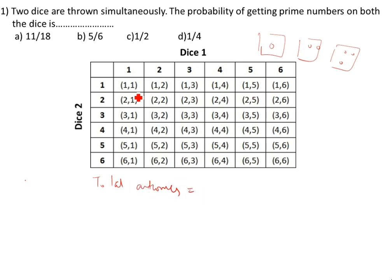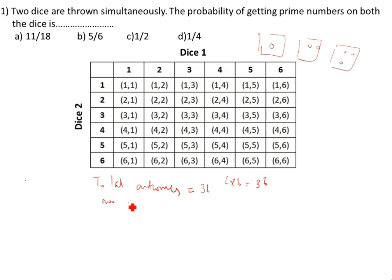Counting the total outcomes: 1, 2, 3... up to 36. So total outcomes equal 36. Otherwise you can write 6 into 6 is equal to 36.